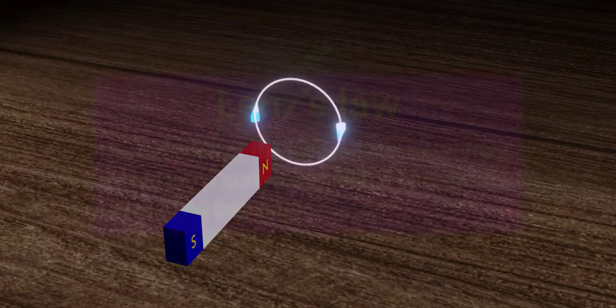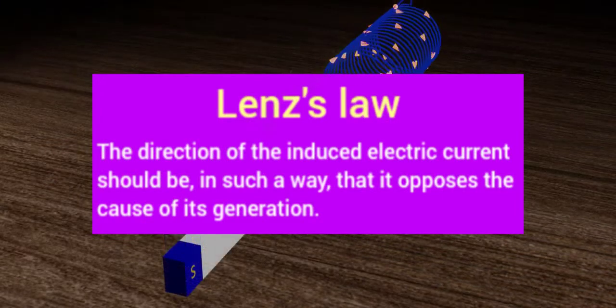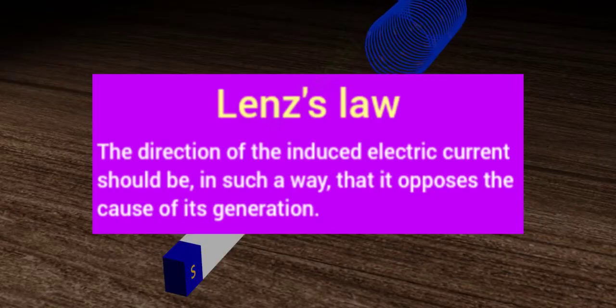Lenz's law has its answers. So what is Lenz's law? It says the direction of the induced electric current should be in such a way that it opposes the cause of its generation.